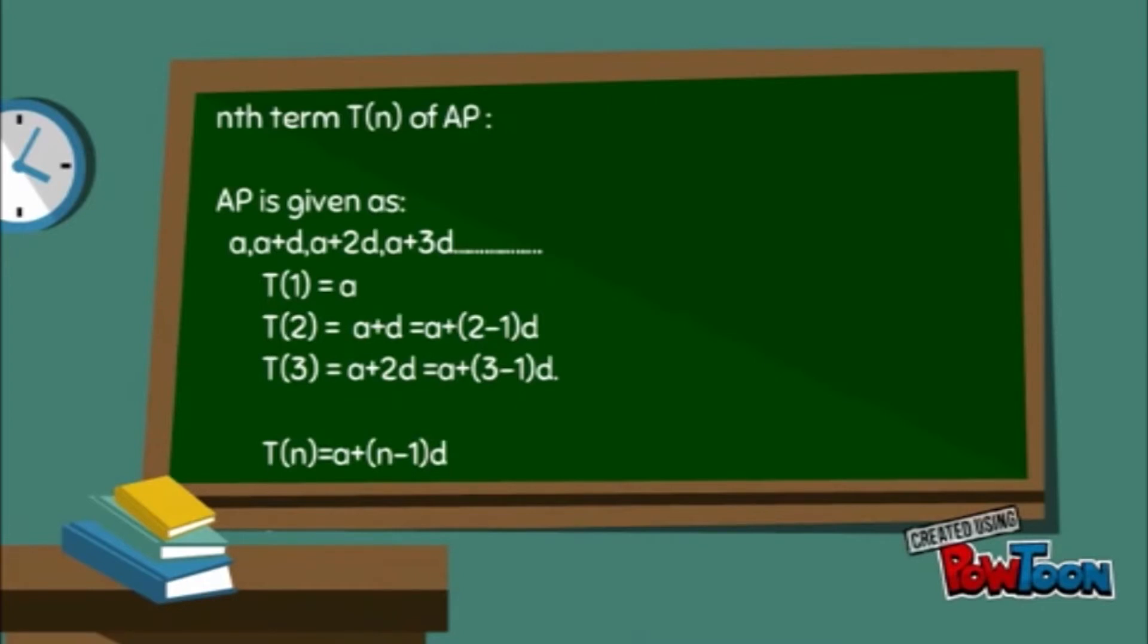Here, first term is a. Second term is a+d, which is equal to a+(2-1)d. So, if n be number of terms and L is the last term of AP, then last term is equal to nth term, which is a+(n-1)d.